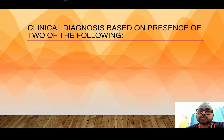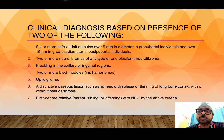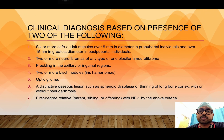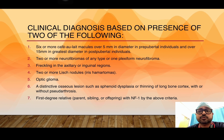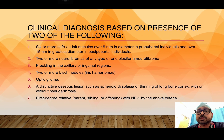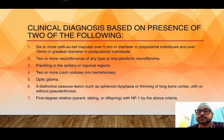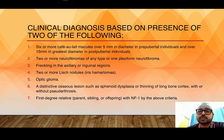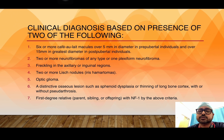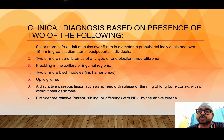Clinical diagnosis of neurofibromatosis type 1 is based on the presence of 2 or more of the following: 6 or more café-au-lait macules over 5 mm in prepubertal and over 15 mm in greatest diameter in post-pubertal individuals; 2 or more neurofibromas of any type or 1 plexiform neurofibroma; freckling in the axillary or inguinal region; 2 or more Lisch nodules which are iris hamartomas; any optic glioma; any distinctive osseous lesions like sphenoid dysplasia or thinning of long bone cortex with or without pseudoarthrosis. And because it is autosomal dominant, a first-degree relative could be involved.